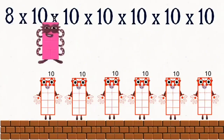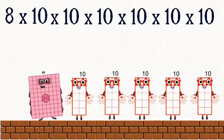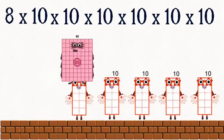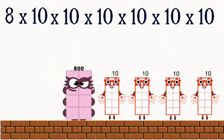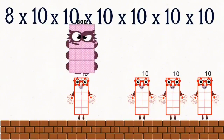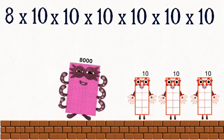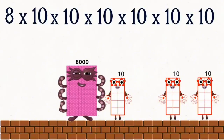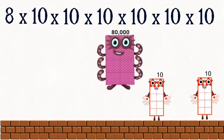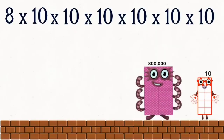228 times 10 equals 80. 80 times 10 equals 800. 800 times 10 equals 8,000. 8,000 times 10 equals 80,000. 80,000 times 10 equals 800,000.